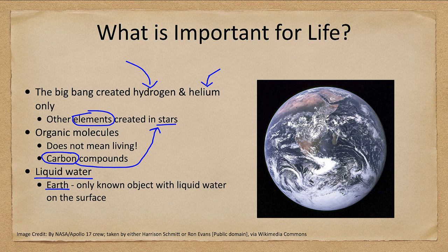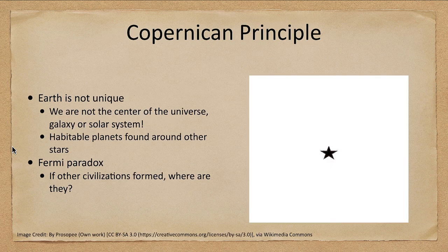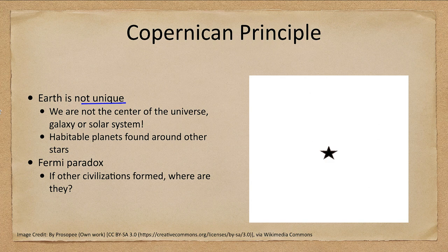Now let's take a look at what is special about Earth. Well, we're not really unique. When we started out, we considered Earth was the center of the universe, then moved out and put the Sun at the center, then thought maybe we were at the center of the galaxy. We've sort of moved ourselves away from that as we learn more and more. We are just one planet among many, and we have found habitable planets around other stars when we looked at the discovery of exoplanets.